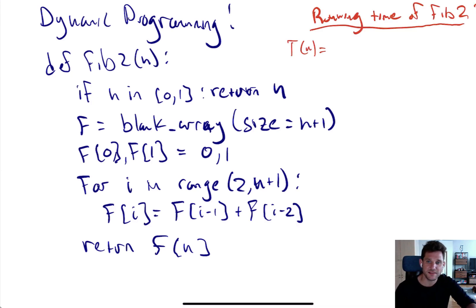Now we need to think about how to compute the running time of this algorithm, the number of steps it takes. So the first line of this algorithm is an O(1) operation. It takes O(1) operations, a constant number of operations. It has to check if n is 0 or 1. Otherwise, it returns n if that holds true. But if n is bigger than 1, then it has to initialize this blank array.